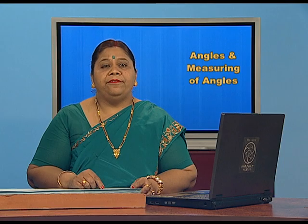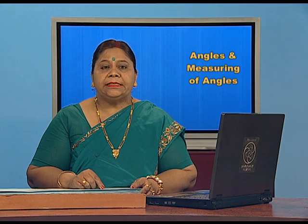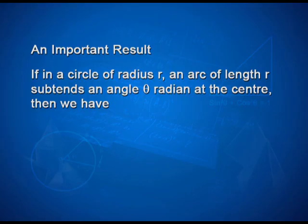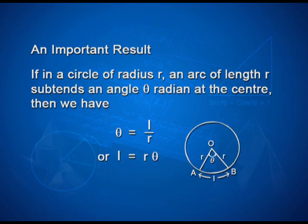Here we have an important result. If in a circle of radius r an arc of length l subtends an angle θ radians at the center, then we have θ = l/r, or equivalently l = r × θ.